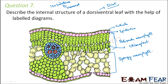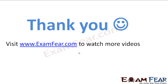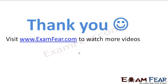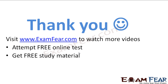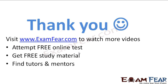With this we have reached the end of the lesson. I hope this lesson on anatomy of flowering plants helped you understand the internal structure of root, stem, and leaf. Remember that understanding things with the help of a diagram will really help you retain information. See you in the next lesson. Please visit exampeo.com to watch more videos, attempt free online tests, get free study material, and find tutors and mentors. Thank you.